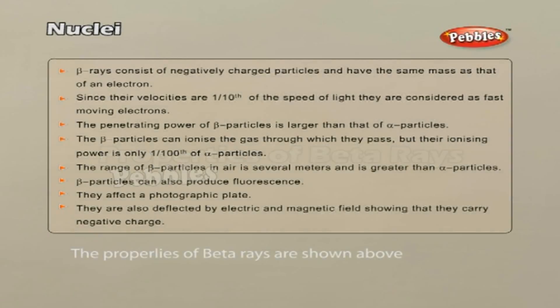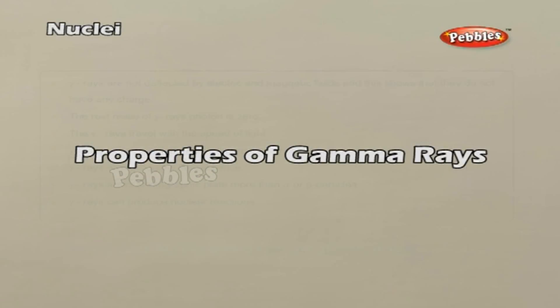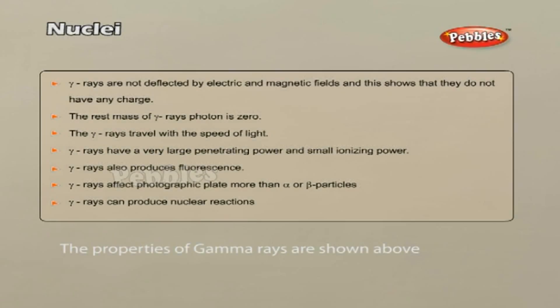Properties of beta rays. The properties of beta rays are shown above. The properties of gamma rays. The properties of gamma rays are shown above.